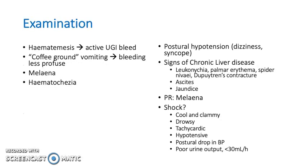For the examination, assess their vomiting. Is it fresh blood — haematemesis — indicating an active upper GI bleed? Or is it coffee ground vomiting, suggesting less profuse bleeding? Do they have melaena or haematochezia? Haematochezia is usually due to a lower GI bleed, but may occur when an upper tract haemorrhage is particularly brisk — known as rapid transit.